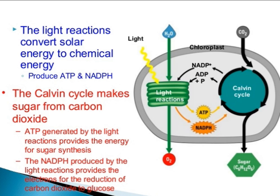The light reaction converts solar energy to chemical energy, producing ATP and NADPH. The Calvin cycle then makes sugar from carbon dioxide. In the light reactions, which occur in the chloroplast, ATP generated provides the energy for sugar synthesis, and NADPH provides the electrons for the reduction of carbon dioxide to glucose.